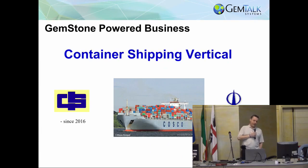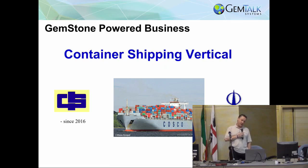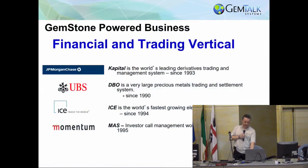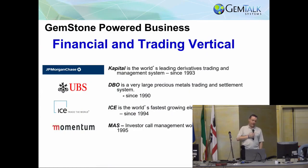Some of our biggest customers are in the container shipping vertical. China Ocean Shipping Company merged with a company in Shanghai called COSCO about two years ago — they're the second or third largest in the world. They run all their container shipping on GemStone and have the world's largest GemStone repository. We also have a lot of customers in the financial trading area: JPMorgan Chase in London, Union Bank of Switzerland in Zurich, ICE down in Atlanta, and a company called Momentum in South Africa.